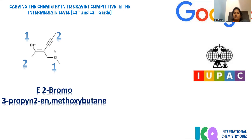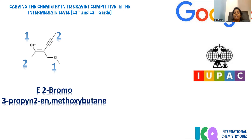In order to give the numbering, we first consider carbon number one. Around carbon number one, according to CIP rule one — higher the atomic number, higher will be the priority. Here, bromo is on one side and carbon is on the other side. Bromine's atomic number is larger, so higher priority is afforded to bromine.